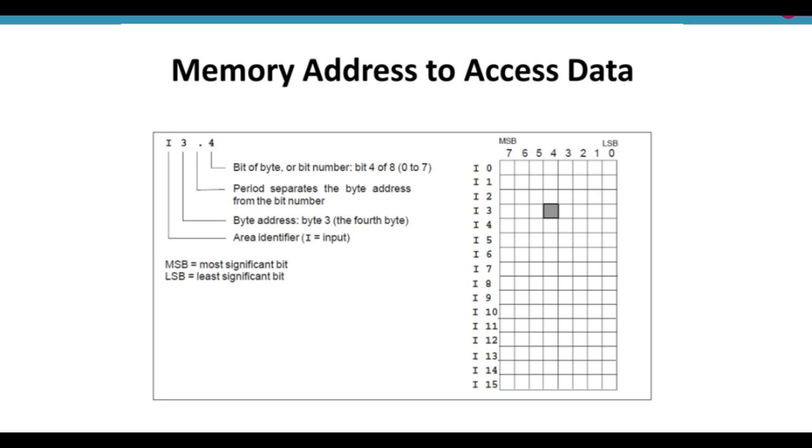Bit 4 of 8: 0 to 7 are the eight bits. This is bit number 4: 0, 1, 2, 3, and 4. This is the fourth bit, and we can write it as I3.4.